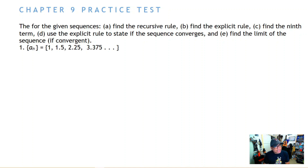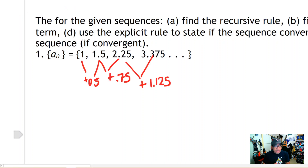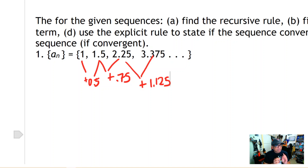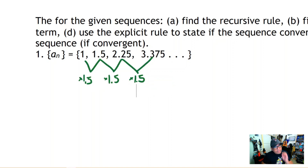For question 1 we have the sequence 1, 1.5, 2.25, and 3.375. One thing you might try is to see if the pattern is an addition pattern, but as we can see that doesn't really work — to get from the first to the second number you add 0.5, then 0.75, then 1.125. There is a pattern there, but look how much cleaner it is if you use the multiplication rule.